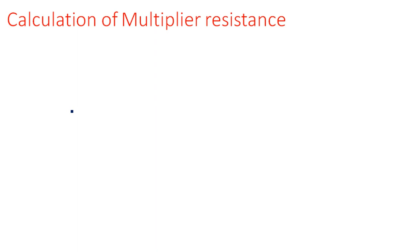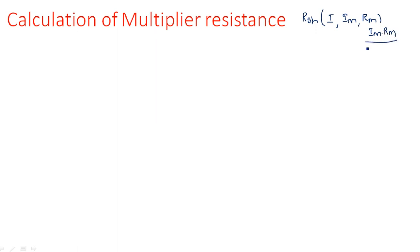Coming to the calculation of multiplier resistance. In the previous case for the ammeter, we calculated the RSH value — which was IM × RM / (I − IM). In the similar way, here also we are going to find out the series resistance or multiplier resistor value for the voltmeter.